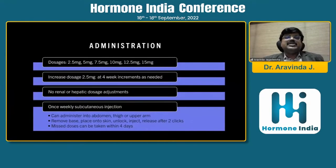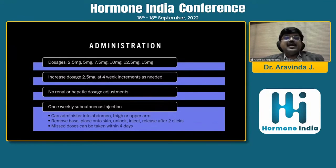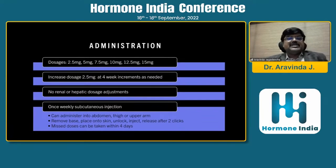Regarding administration, the dosage starts at 2.5 mg and goes up to 5 mg, 7.5 mg, 10 mg, 12.5 mg, and 15 mg. Increase the dosage starting from 2.5 mg, then increase by 2.5 mg at 4-week increments as needed. No renal or hepatic dose adjustment is required. It is a once-weekly subcutaneous injection that can be administered into the abdomen, thigh, or upper arm.